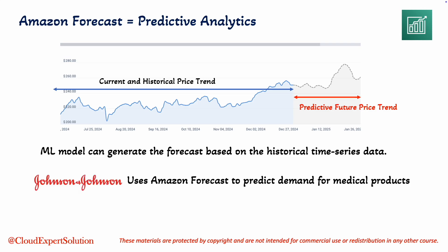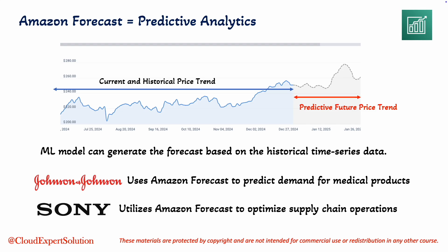Johnson & Johnson uses Amazon Forecast to predict demand for medical products, improving inventory management and reducing waste. Sony, on the other hand, utilizes Amazon Forecast to optimize supply chain operations, ensuring timely delivery of products.